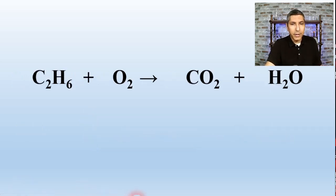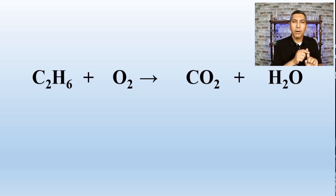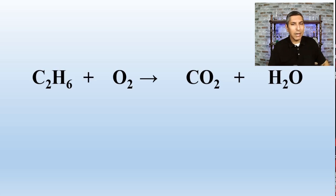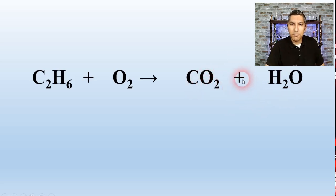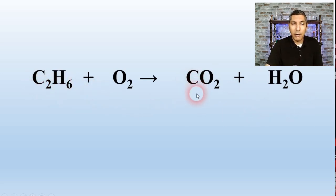Let's look at a combustion reaction: C2H6 reacting with O2 to produce CO2 and water. For a combustion reaction, I strongly recommend balancing in this order: carbon first, hydrogen next, and oxygen last. The reason to balance oxygen last is that it's split between two different product substances. So starting with carbon: 2 on the left and 1 on the right, so I multiply CO2 by 2.